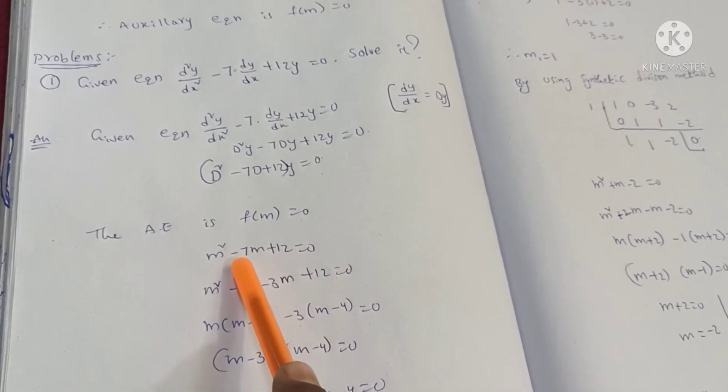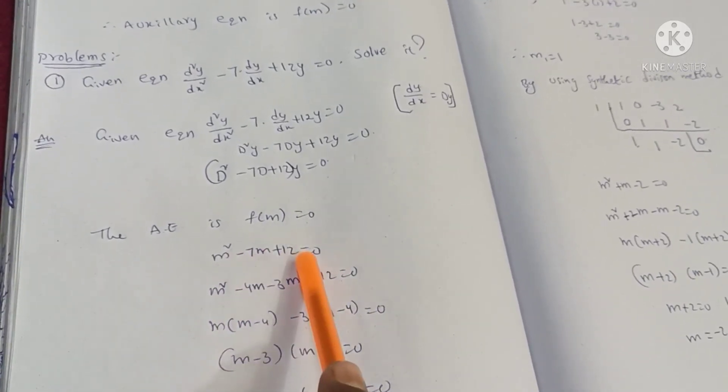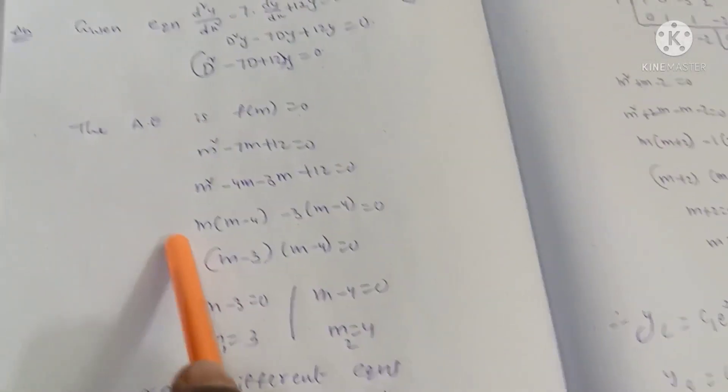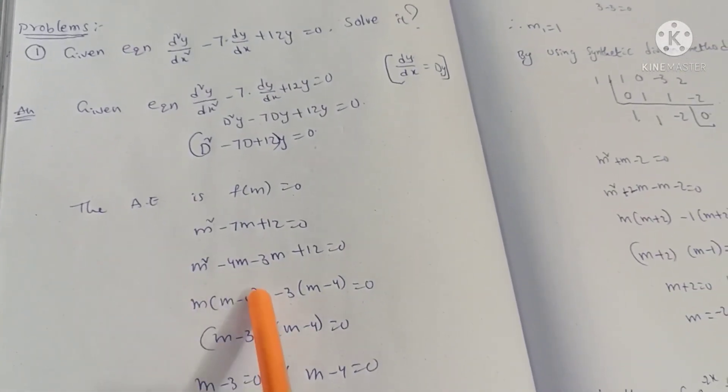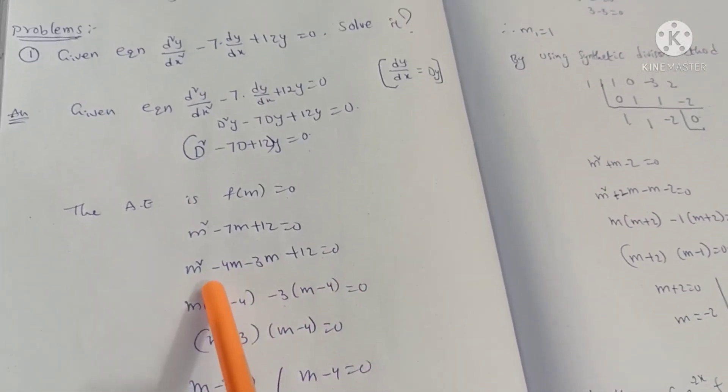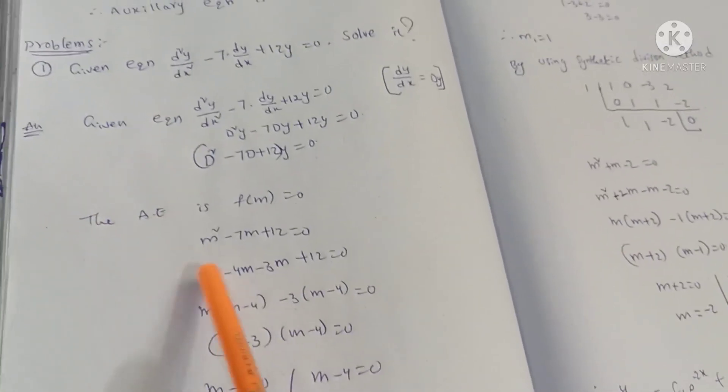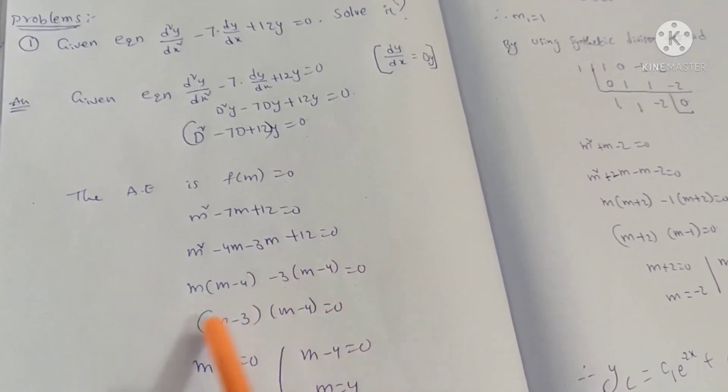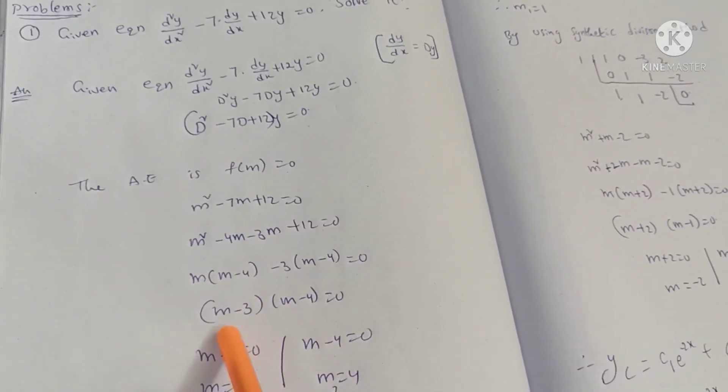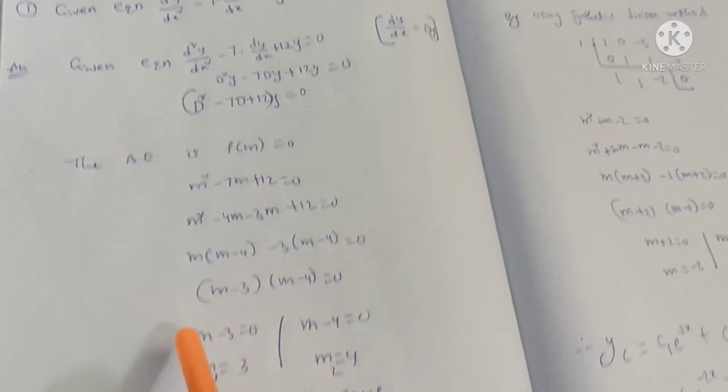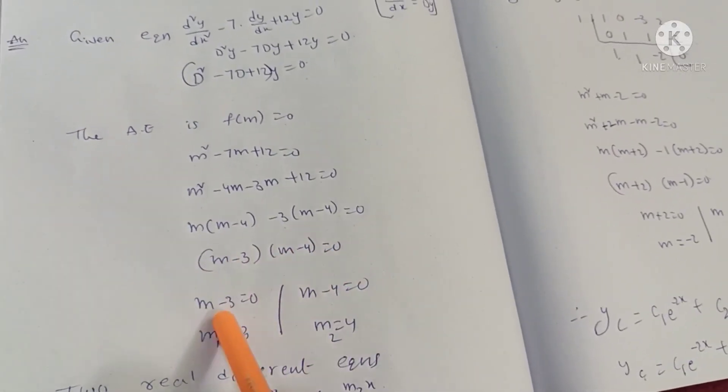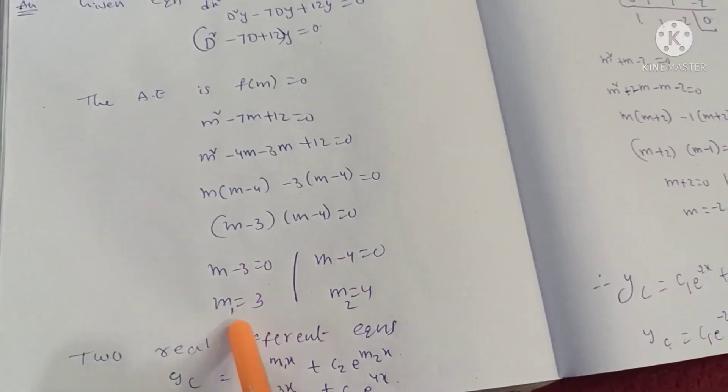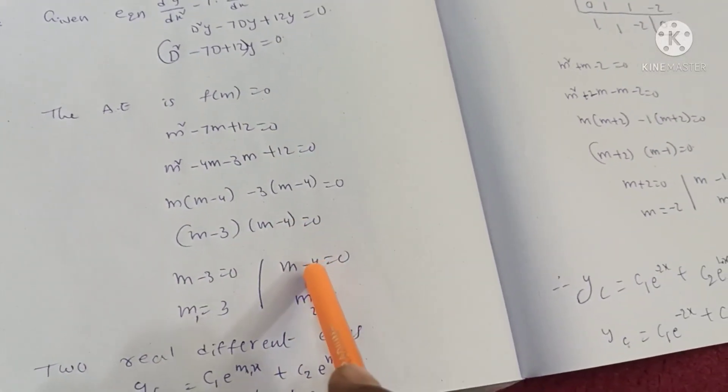Now, m² minus 4m minus 3m plus 12 equals 0. We need to factor this. m into m minus 4. We need to write as m minus 3. m minus 4 is the second factor.